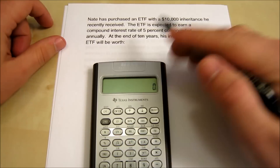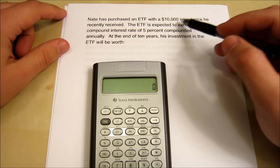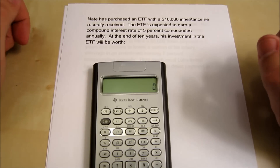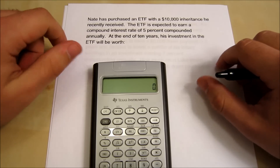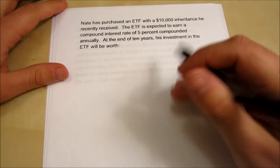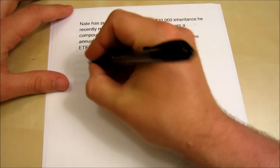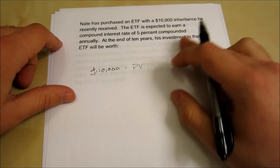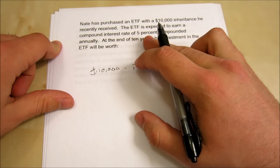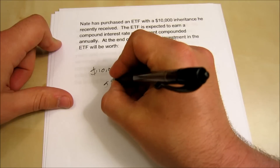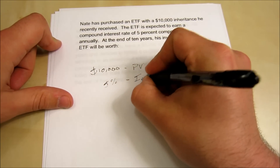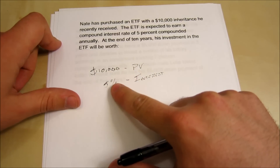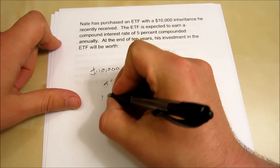Example: Nate has purchased an ETF with a $10,000 inheritance. The ETF is expected to earn a compound interest rate of 5% compounded annually. At the end of 10 years, what will his investment be worth? So $10,000 is our present value — that's what we're investing today. Five percent is our interest rate, and 10 years is our duration.